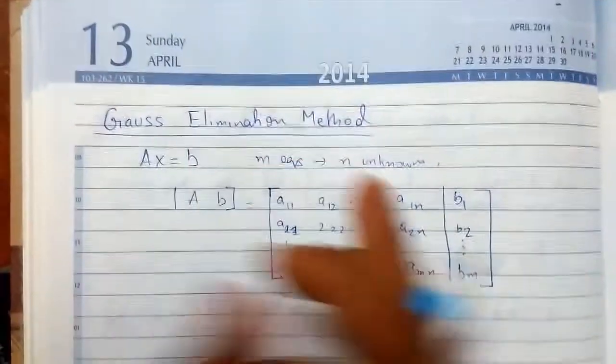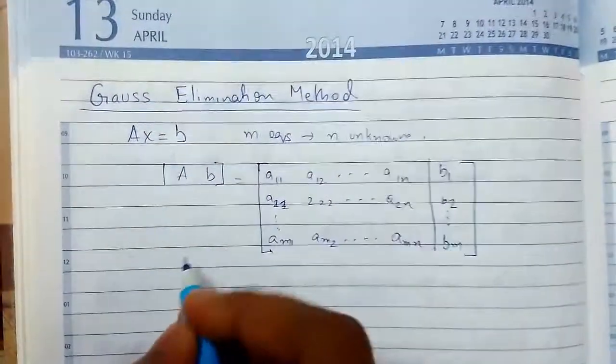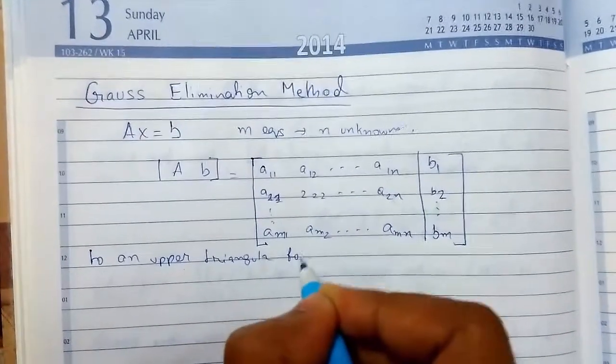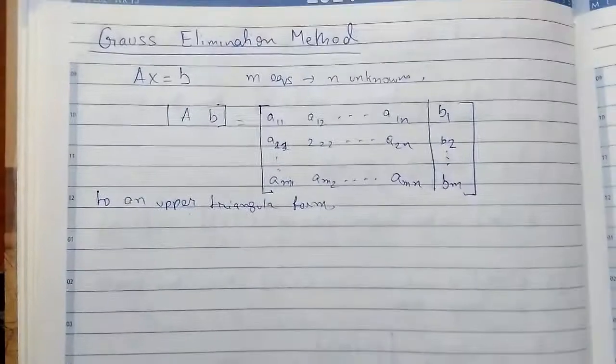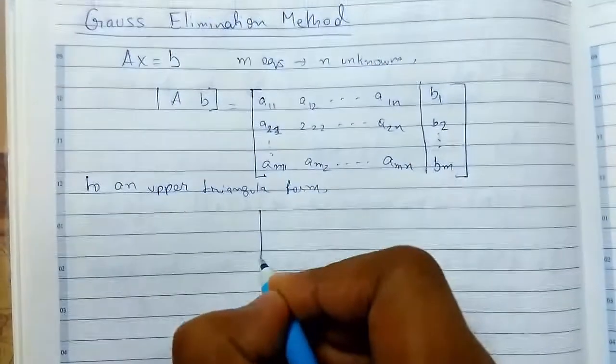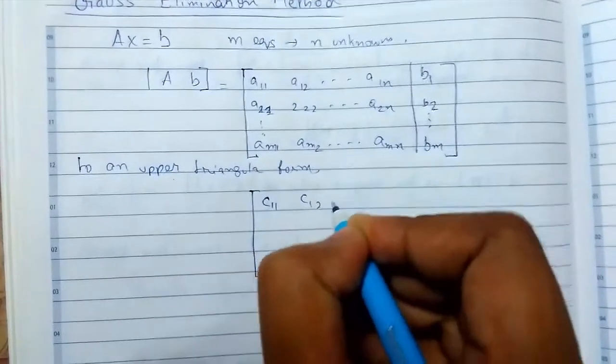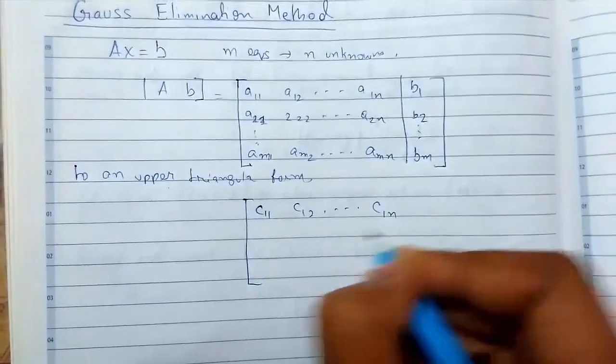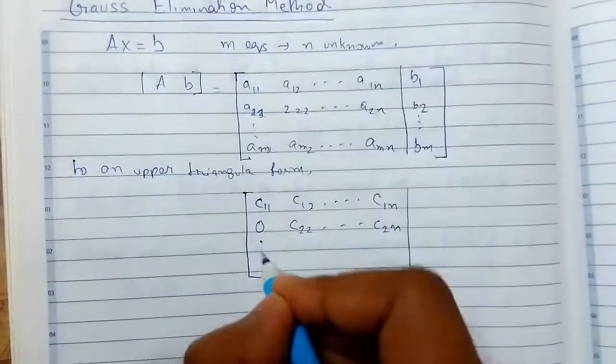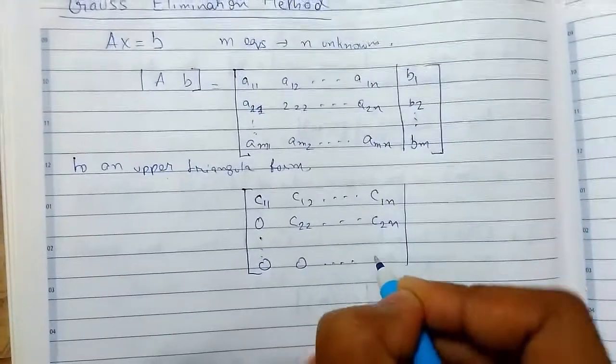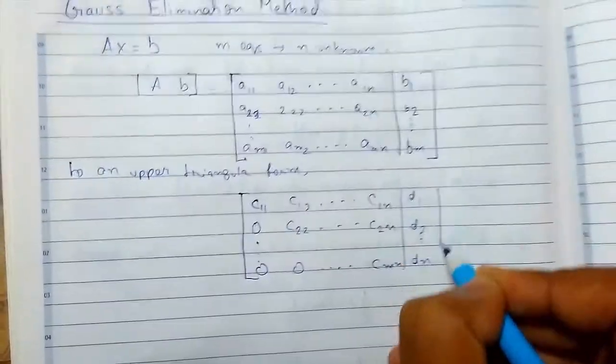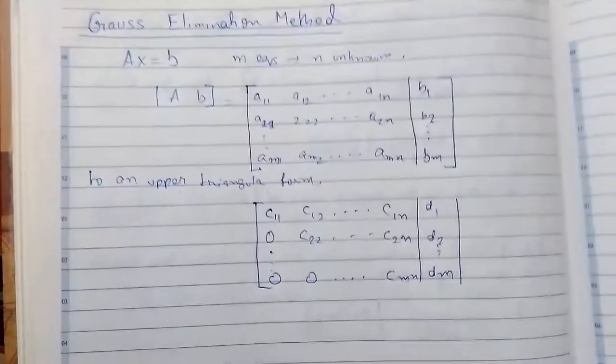To use Gaussian method we need to convert an augmented matrix into an upper triangular form matrix. An upper triangular matrix is something where below the principal diagonal elements all the elements should be 0. So this is how it looks like: c₁₁ c₁₂... 0 c₂₂ c₂ₙ and so on, 0 0 and this will be cₘₙ and this is d₁ d₂ and so on dₘ. So this is how upper triangular matrix looks like.